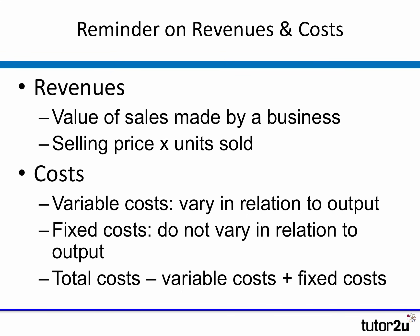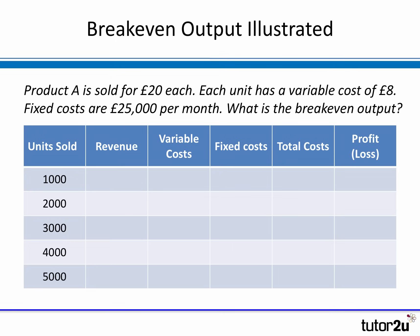Costs in break-even analysis, very importantly, are broken down into two different types. Variable costs are those that vary in relation to output — units produced or units sold. Fixed costs are the costs that do not vary in relation to output. To calculate total costs we have to calculate variable costs plus fixed costs.